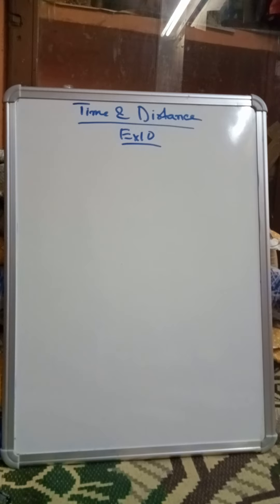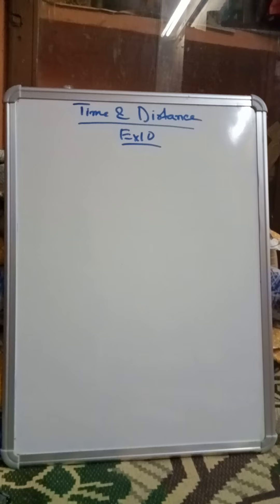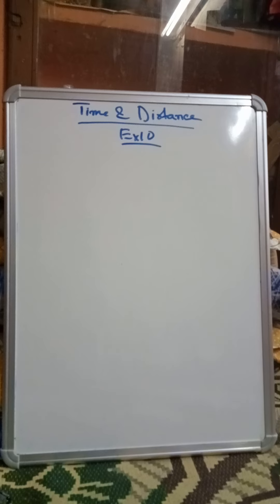Today in this video I am going to discuss sum number 45. Please all of you follow this sum. A boat covers 60 km in 5 hours along the current. If the actual speed of the boat is 8 km per hour, then what is the speed of the river current?